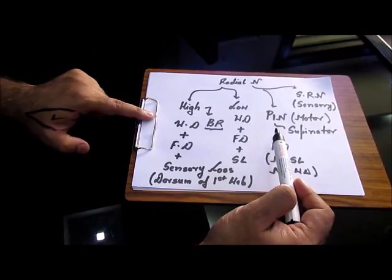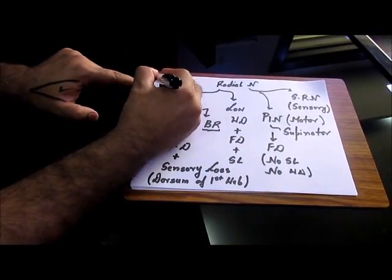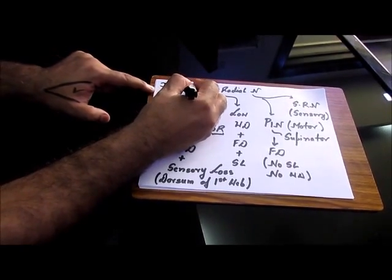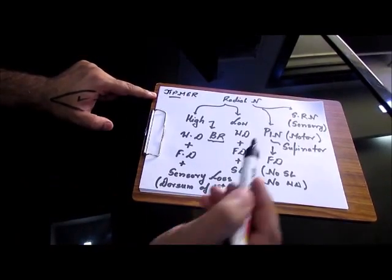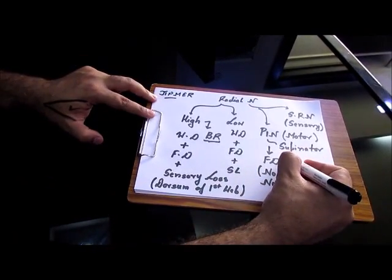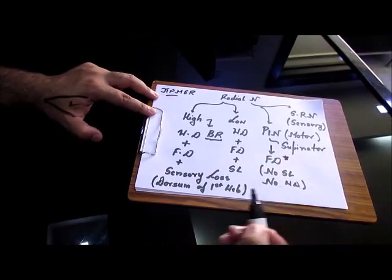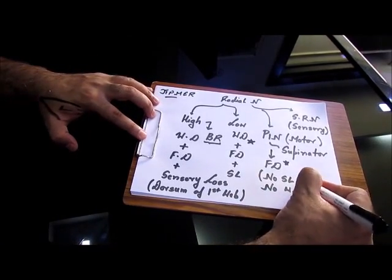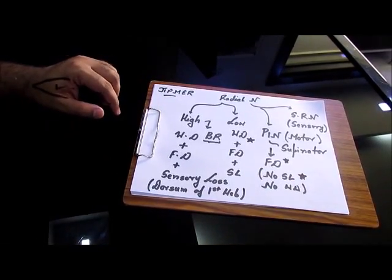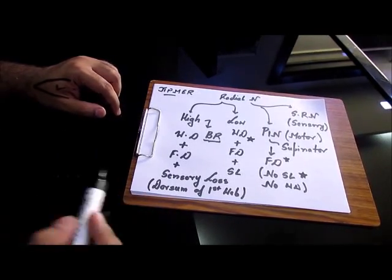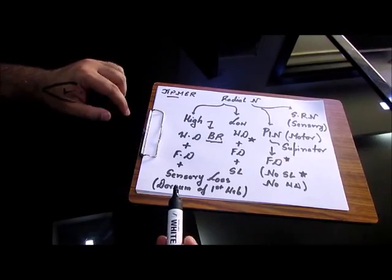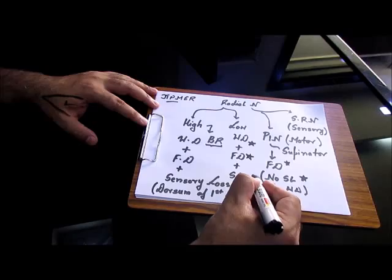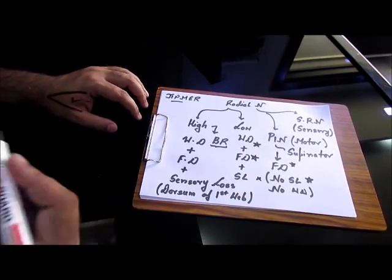The question which was asked in JIPMER was a very intelligent MCQ. A patient has finger drop, wrist drop but no sensory loss. Which area is the nerve damaged?